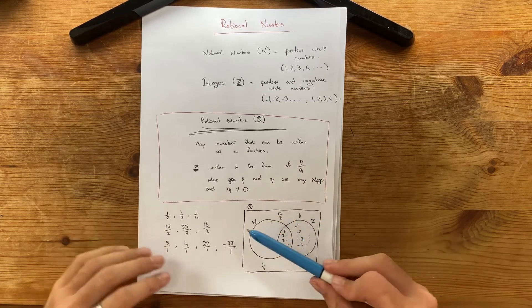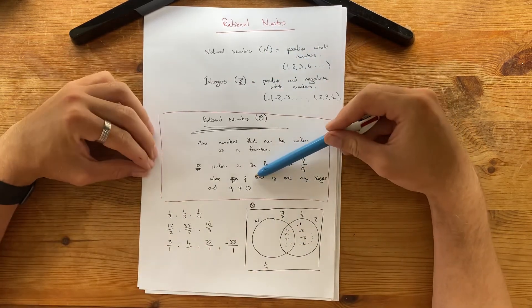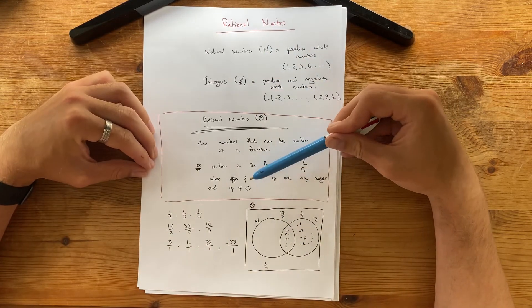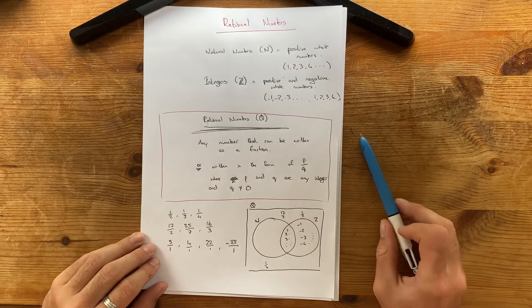So, basically, what you've got is that every number, every natural number and every integer is a rational number. But not all rational numbers are natural numbers and integers. So, I like to visualize it like that. It's a nice way of thinking about it.